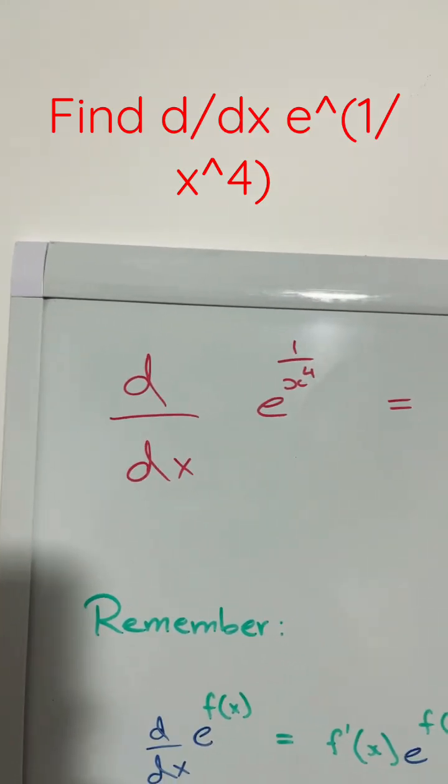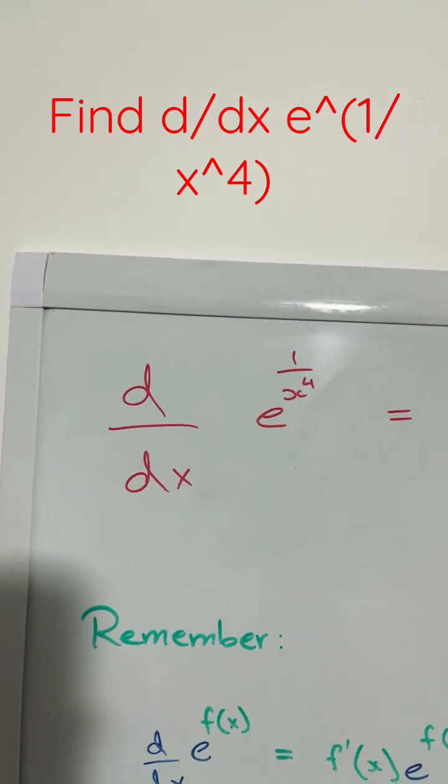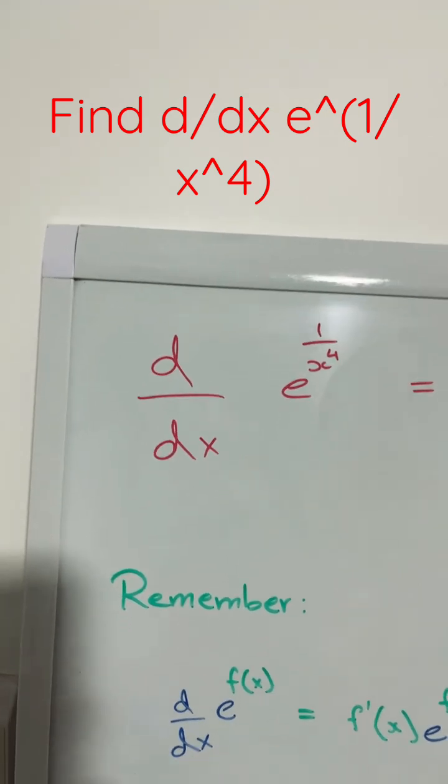Find the derivative of e to the power of 1 over x to the power of 4. Now this is really simple to do.